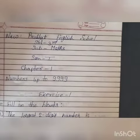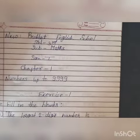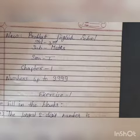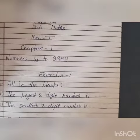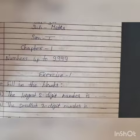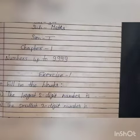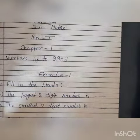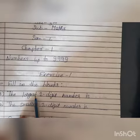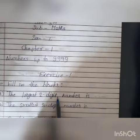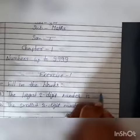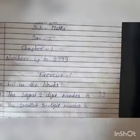So iska Exercise 1 start karte. Exercise 1 mein fill in the blanks — aapko blanks fill karne hain. First: the largest 2-digit number is. When we are asking about the largest, that means how many numbers are continued with 9. Largest 2-digit number yani ki 2 baar 9 — that is 99.